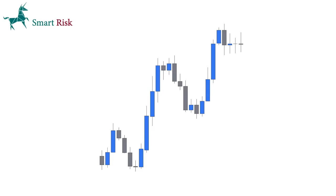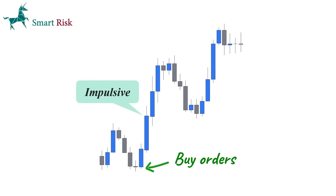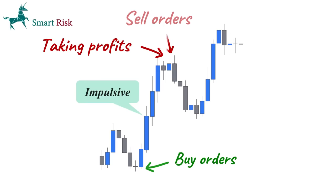When market sentiment is bullish and traders are optimistic about a currency pair, they tend to buy it, which leads to an impulsive move in one direction. However, as the price rises, some traders may start to feel that the currency is becoming overvalued and decide to take profits. On the other hand, some might go short, which can trigger a pullback or retracement.